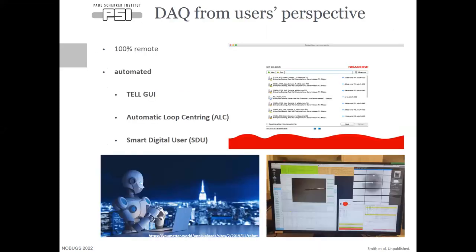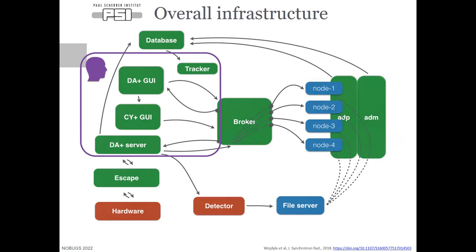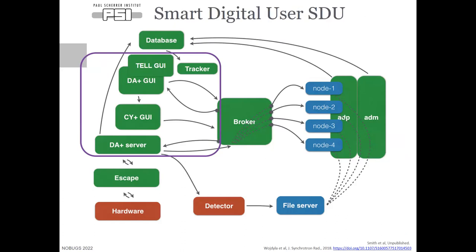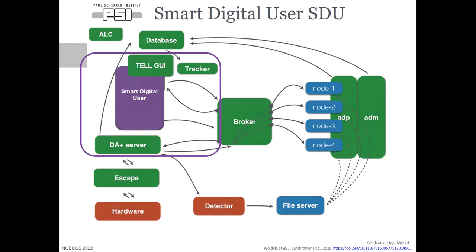Following all of these developments, and contributing with the COVID pandemic at now 100% remote, we had to really drive forward the development of automation software to catch up with all these upgrades. We updated our robot GUI — the TEL graphical user interface — and implemented automatic loop centering at all three beamlines. Using all of these services together, we created the Smart Digital User, which performs our unattended data collection routines. We can now remove the user if they wish, and since they're removed we still need to centre the samples, which is where automatic loop centering comes in, replacing the data acquisition GUI with our Smart Digital User. In the future we want to extend that capability to serial crystallography collections as well.